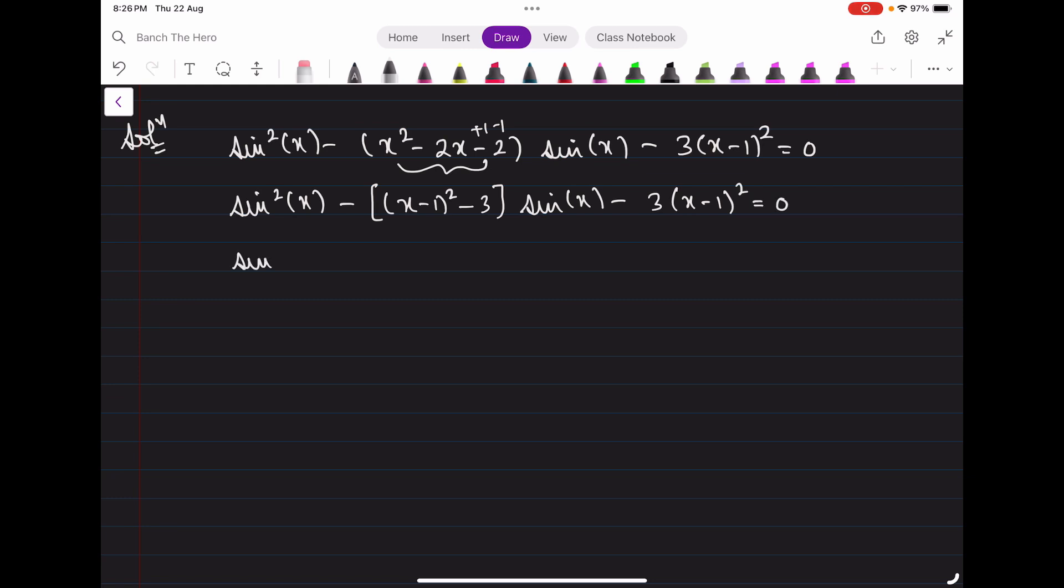We can write this as sin²x - (x - 1)² multiply by sin(x) and here it is minus minus plus 3 times sin(x) - 3 into (x - 1)². From the first two terms, we can take sin(x) common. In the bracket we have sin(x) - (x - 1)². From the other bracket, we take 3 common. In the bracket we have sin(x) - (x - 1)² = 0.